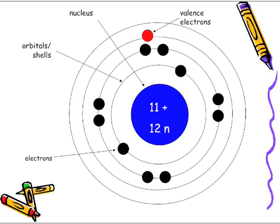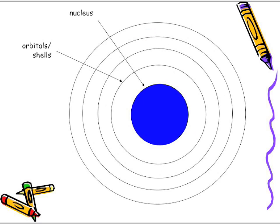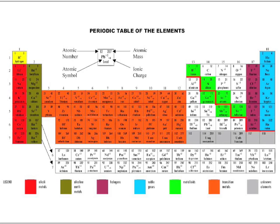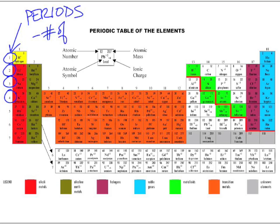Going back to the periodic table, we talked about the period numbers. These period numbers have another important bit of information. The period number — one, two, three, four — also tells us the number of orbitals around the nucleus. Atoms on the first period have one orbital, the second period have two orbitals, the third period have three orbitals, and on the fourth period — and we're only going up to element number 20 — they have four orbitals.